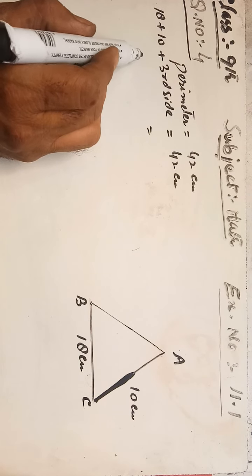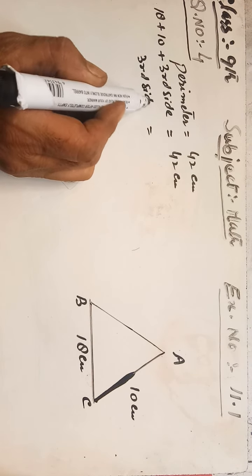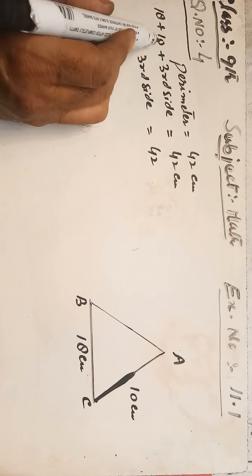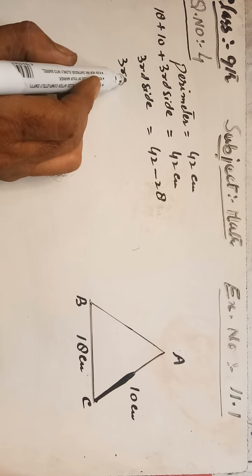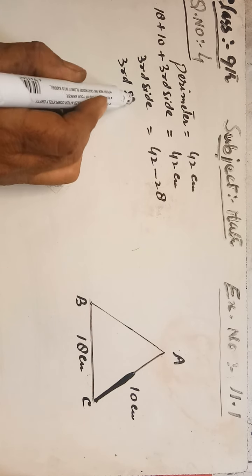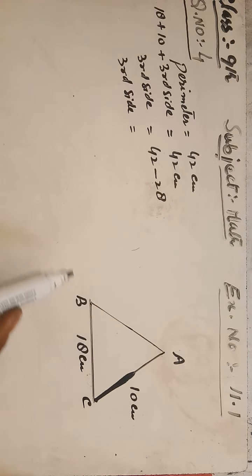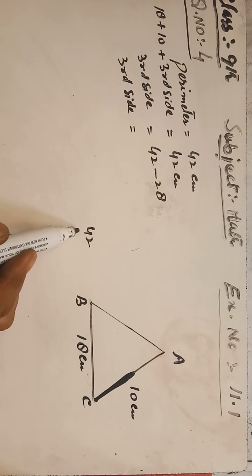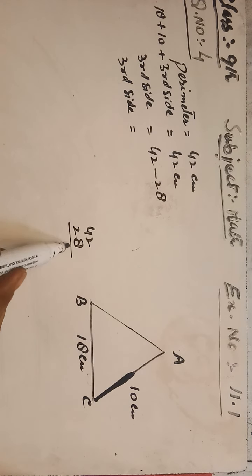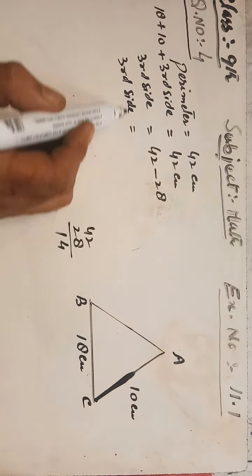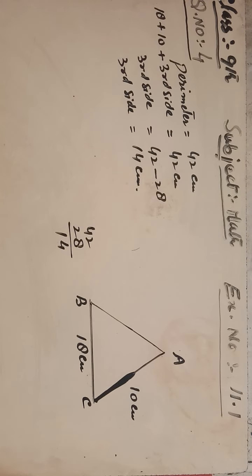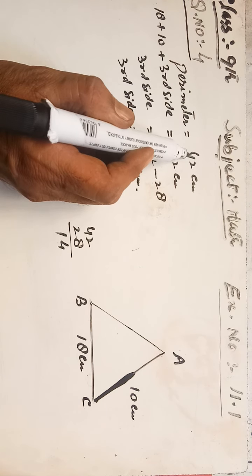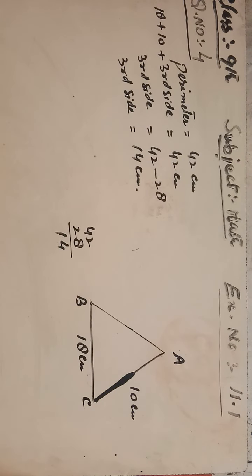The third side: total perimeter 42 centimeters minus the other two sides gives us the third side. So the third side equals 42 minus 18 minus 10, which equals 14 centimeters. Therefore the third side is 14 centimeters.